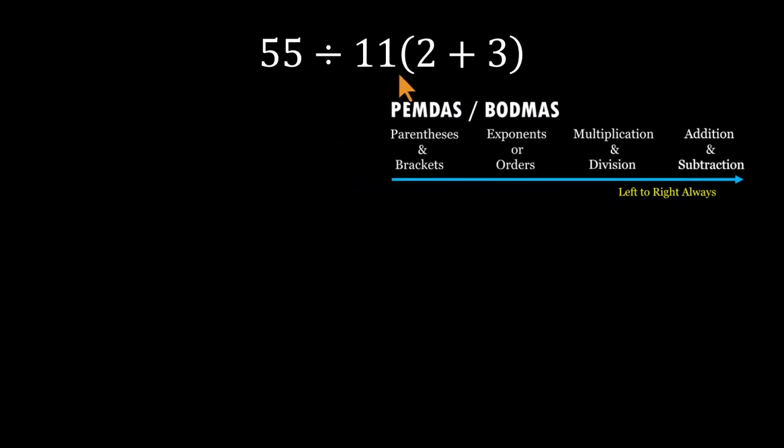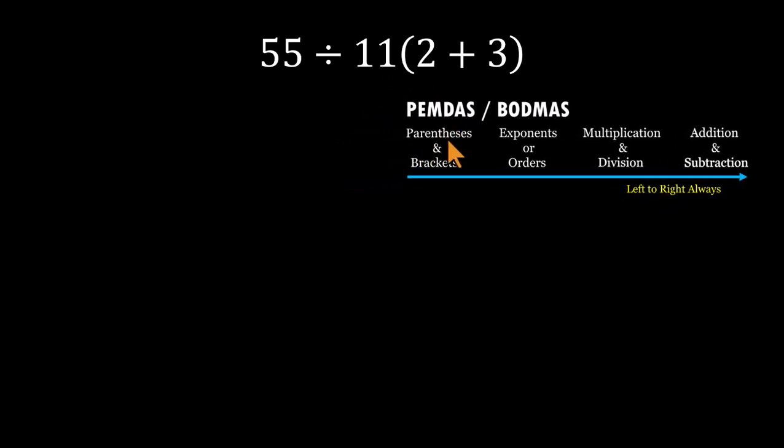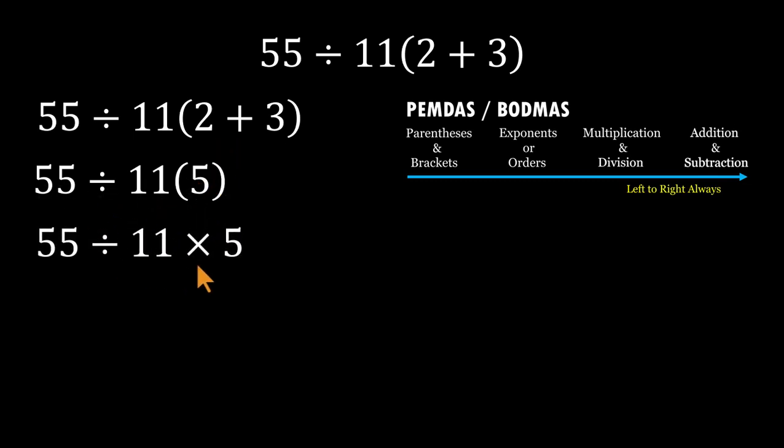So first, as always, we deal with the parentheses. 2 plus 3 equals 5. Easy. Now we're left with 55 divided by 11 times 5.